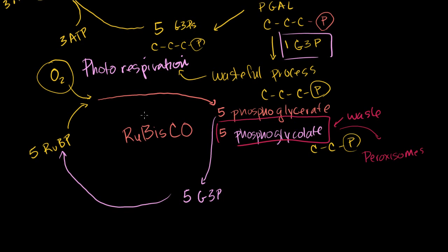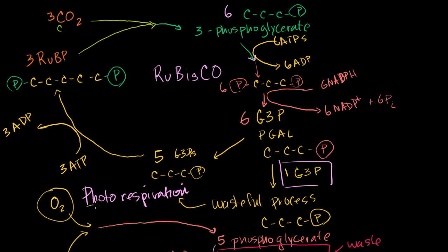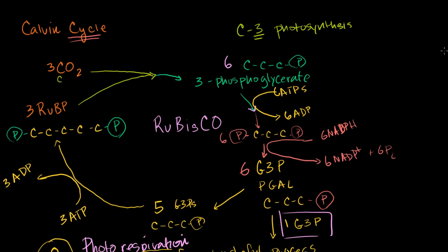It's interesting that rubisco can react with ribulose biphosphate and CO2 to give us the regular Calvin cycle, or it can react with ribulose biphosphate and oxygen, fixing oxygen into phosphoglycerate and phosphoglycolate — a waste compound — so no useful sugars are produced. In the next video, I want to study plants that have gotten around this photorespiration problem by performing C4 photosynthesis instead of the classic C3 Calvin cycle.